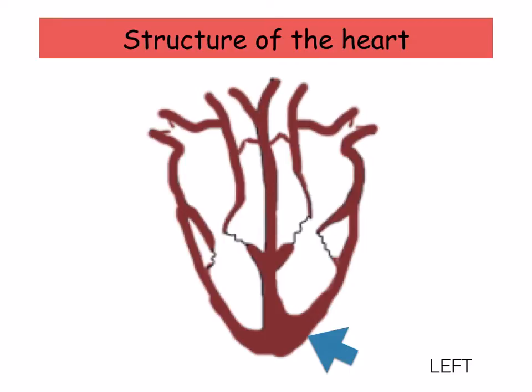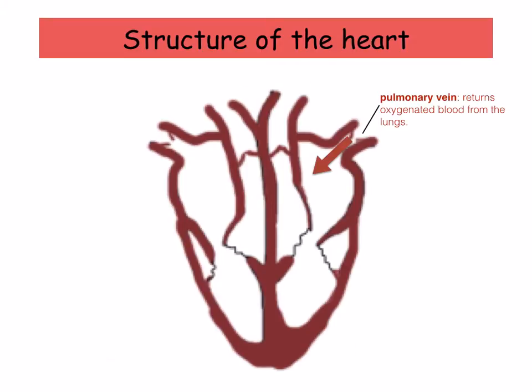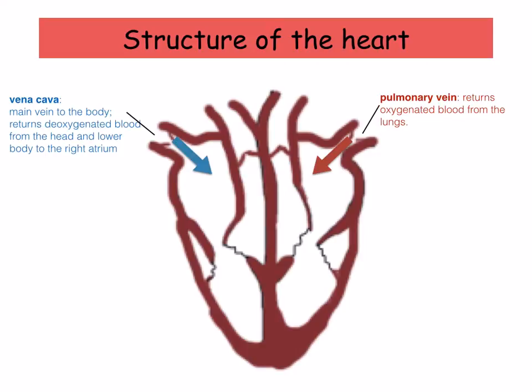So you've got the left and the right. Let's label the different parts, starting with the vessels that bring blood back to the heart. On the left, you've got the pulmonary vein — this returns oxygenated blood from the lungs. On the right, you've got the vena cava, which is the main vein in the body. This returns deoxygenated blood from the head and lower body to the right atrium.